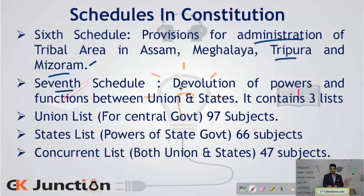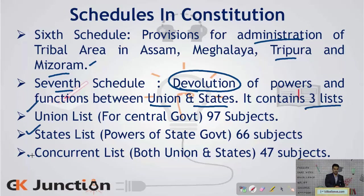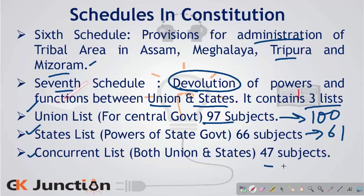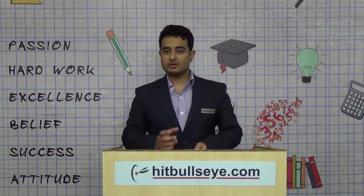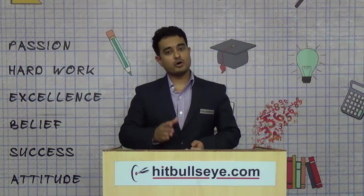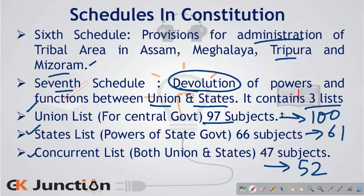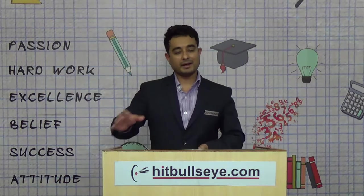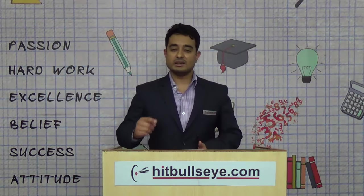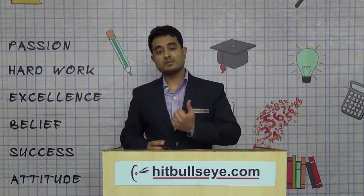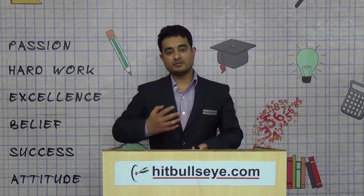The seventh schedule provides the measure of devolution of powers, that is the division of legislative powers between the union and the states. It contains three lists: the Union List, State List and Concurrent List. Initially there were 97 subjects in the Union List but now there are 100; in the State List there were 66 but now 61; and in the Concurrent List there were 67 but now 52. In the Union List only the centre can legislate; in the State List only states can make laws; and in the Concurrent List both can, but if there is a clash the central law will prevail.